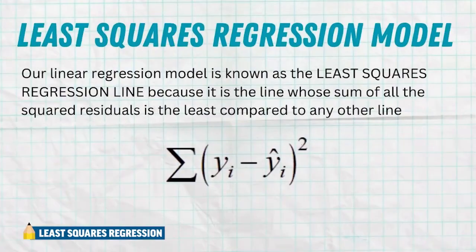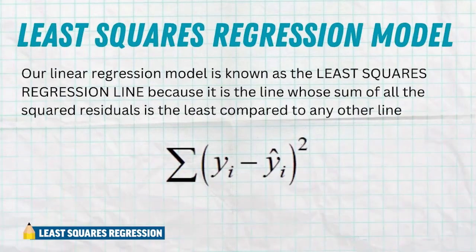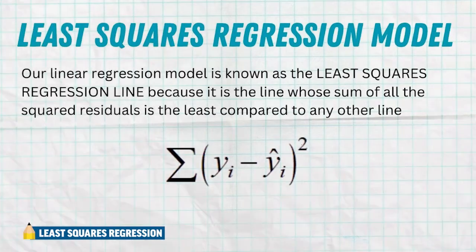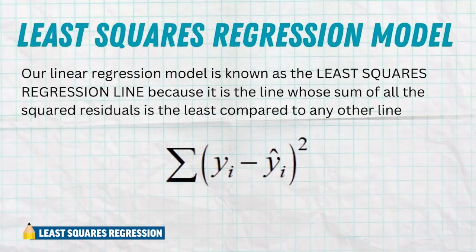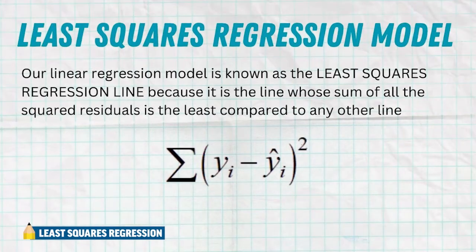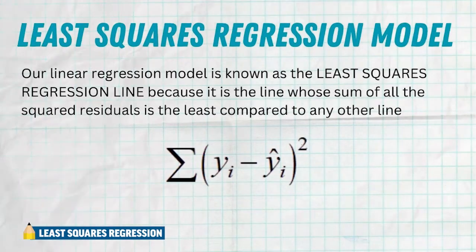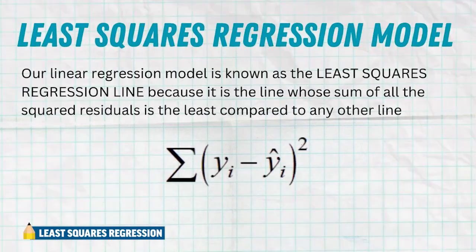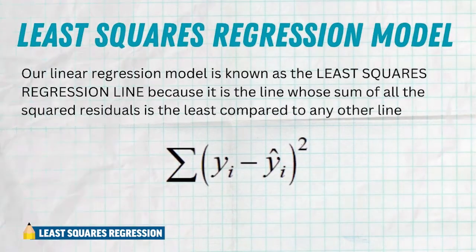Now that we know a little bit more about residuals, we can understand why residuals help us determine what is the best line for our data. Our linear regression model is known as the least squares regression line because it is the line whose sum of all the squared residuals is the least compared to any other line.